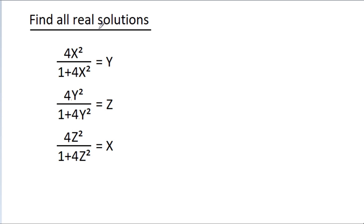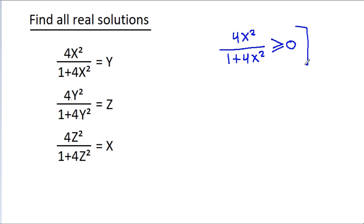So 4x² cannot be negative, and 1 + 4x² cannot be negative, so 4x² / (1 + 4x²) will be greater than or equal to 0. That means y should be greater than or equal to 0, and in the same way, g should be greater than or equal to 0, and x should be greater than or equal to 0.